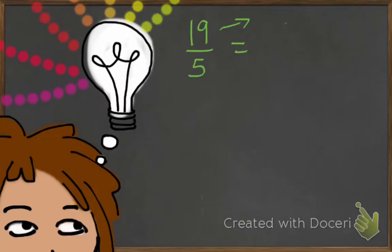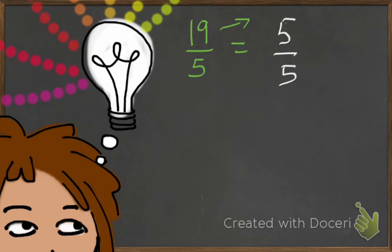Let's start with this fraction: we have 19 over 5, which is an improper fraction. It is an improper fraction because the numerator is bigger than the denominator. We will change this improper fraction into a mixed number. We know that our whole number here is 5 over 5.